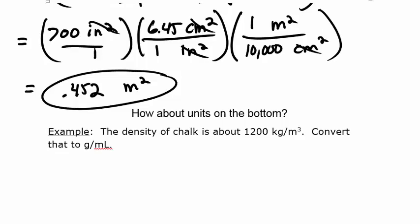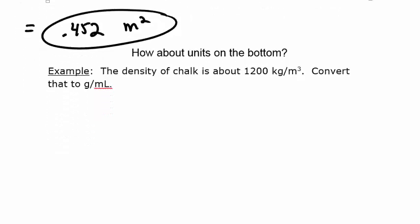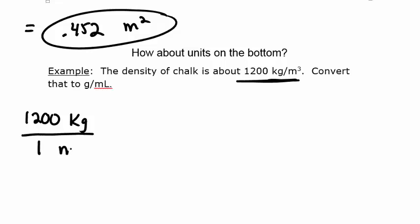The final example covers units on the bottom. We want to convert 1,200 kilograms per meter cubed — the density of chalk — to grams per milliliter. We write it as 1,200 kilograms per 1 meter cubed. When you have units on both top and bottom that need converting, handle the top and bottom separately.